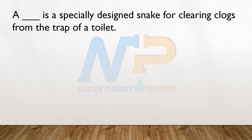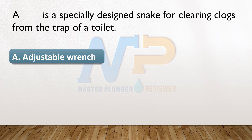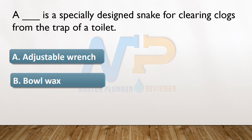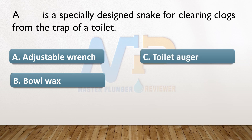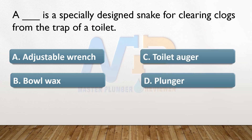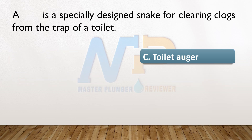A blank is a specially designed snake for clearing clogs from the trap of a toilet. A. Adjustable wrench. B. Bowl wax. C. Toilet auger. D. Plunger. The answer: C. Toilet auger.